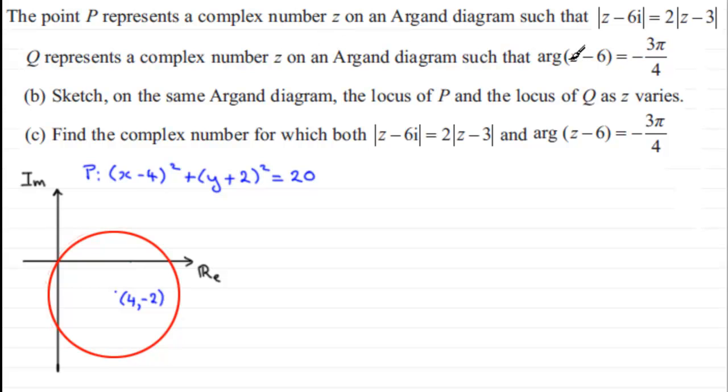Now, for Q, this we should recognize—the arg of z minus 6 equals minus 3π upon 4. This is what we call a half line. It starts at the point 6 on the real axis. So if I was to mark off, say, 6 somewhere around here, then we've got a half line inclined at an angle of minus 3π upon 4 radians to the positive real axis. So that's going to be a line going back something like this. And I know that it's going to go through the center of the circle at 4 minus 2, because minus 3π upon 4 is a line inclined—this acute angle in here would be 45 degrees. So I know for every one unit across, you'd expect to drop one unit down. And I can see that if I go two units across to the 4 and two units down, I'll be at 4 minus 2.